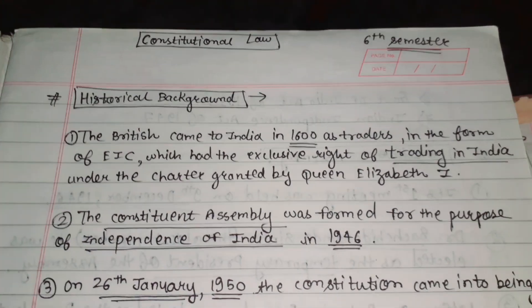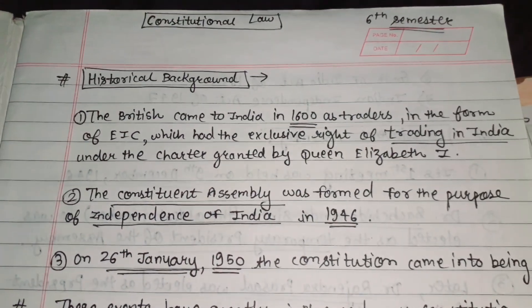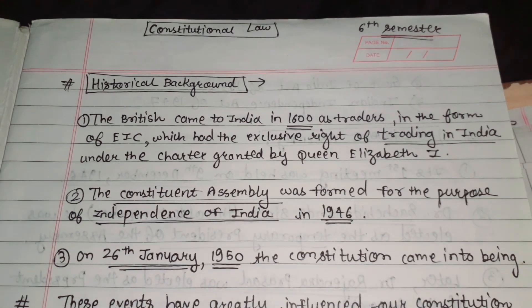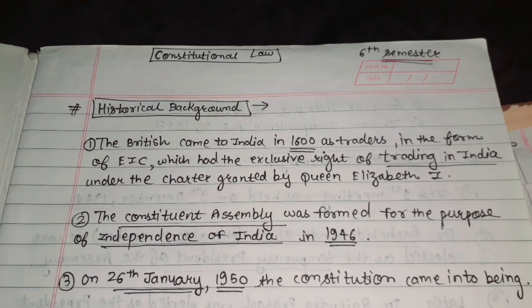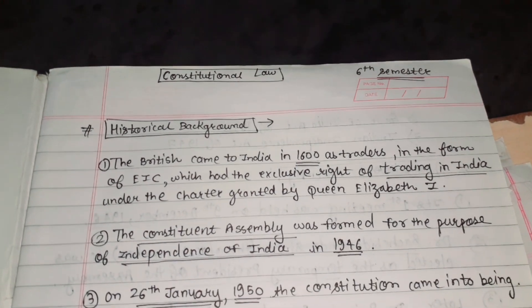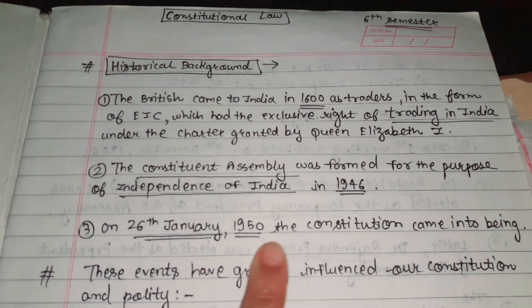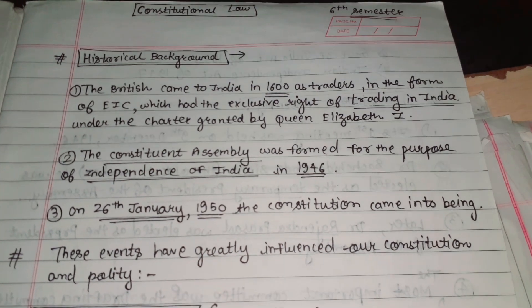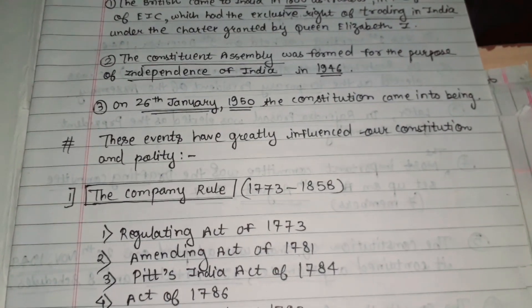In constitutional law, first we will see the historical background. The British came to India in 1600 as traders in the form of the East India Company, which had the exclusive right of trading in India under the charter granted by Queen Elizabeth. The Constituent Assembly was formed for the purpose of independence of India in 1946. On 26 January 1950, the Constitution came into being.